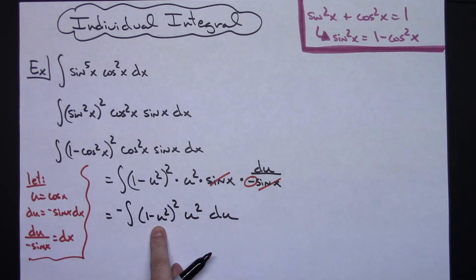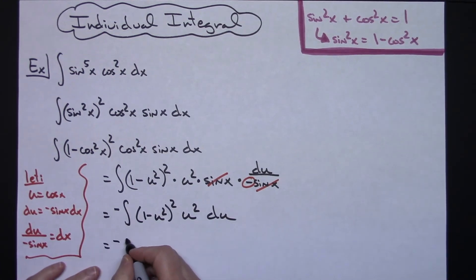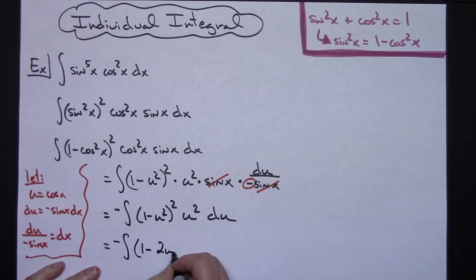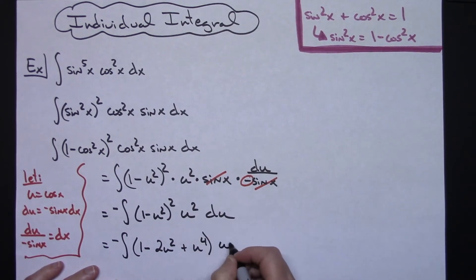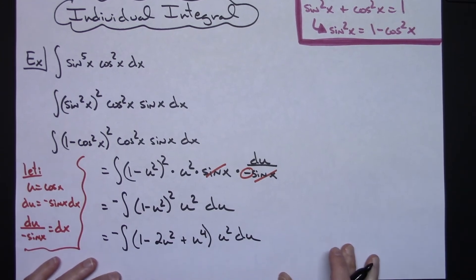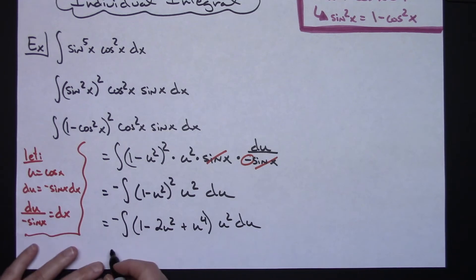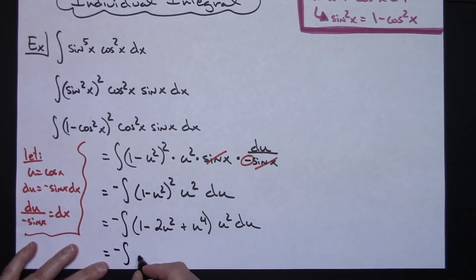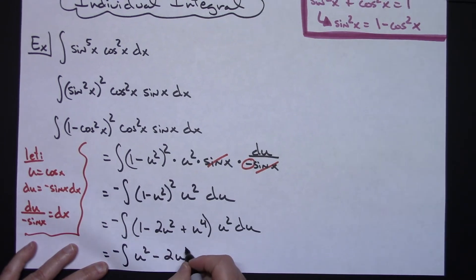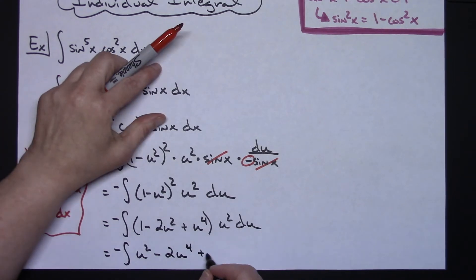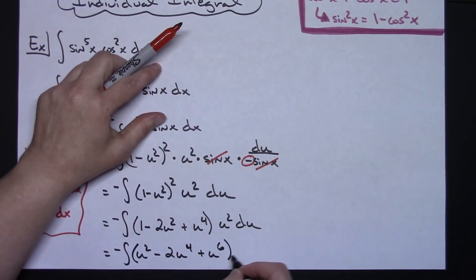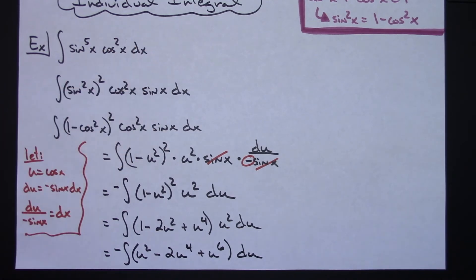Leaving the negative on the outside, I foil out 1 minus u squared quantity squared to get 1 minus 2u squared plus u to the fourth. Then I distribute the u squared on the outside, giving me a straight polynomial: negative the integral of u squared minus 2u to the fourth plus u to the sixth du.